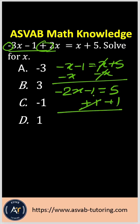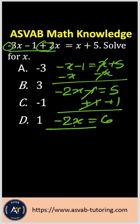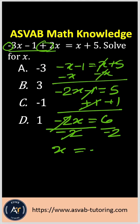Now you have to add both sides by 1. The 1's cancel out, giving you negative 2x equals 6. To eliminate the 2, you divide both sides by negative 2. Negative 2 cancels out, giving you x equals 6 divided by negative 2, which equals negative 3. So the correct answer is option A.